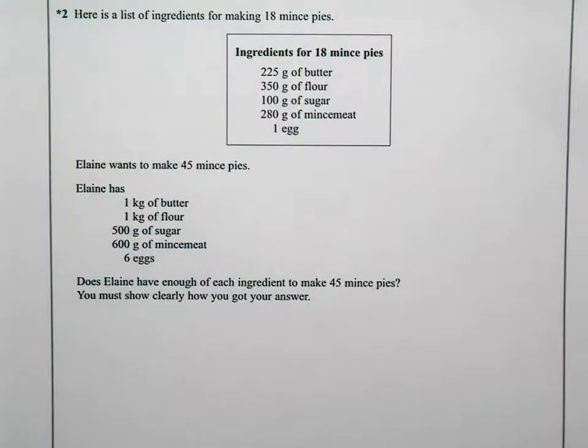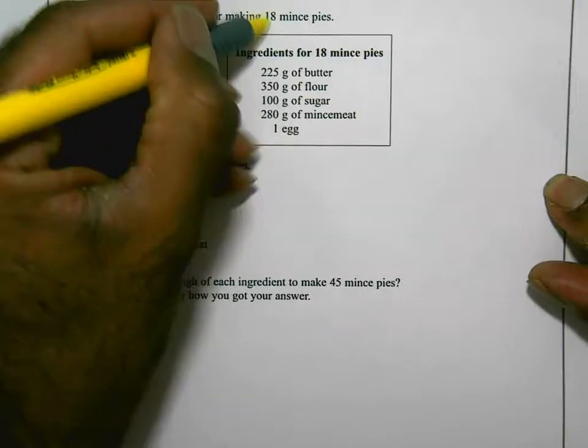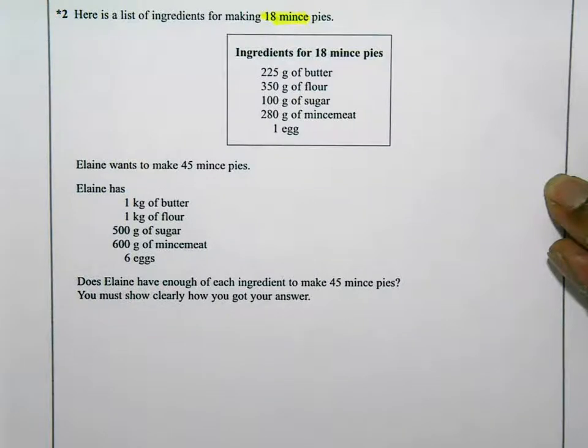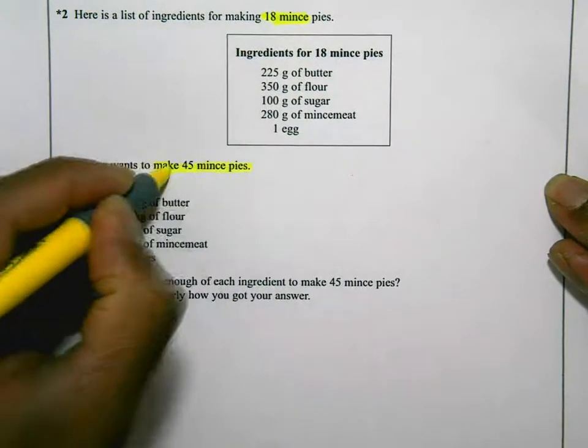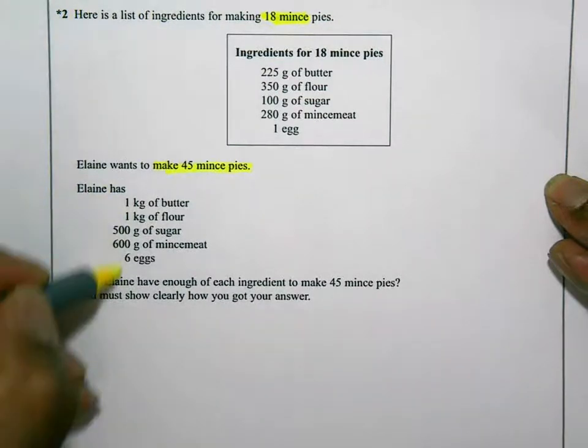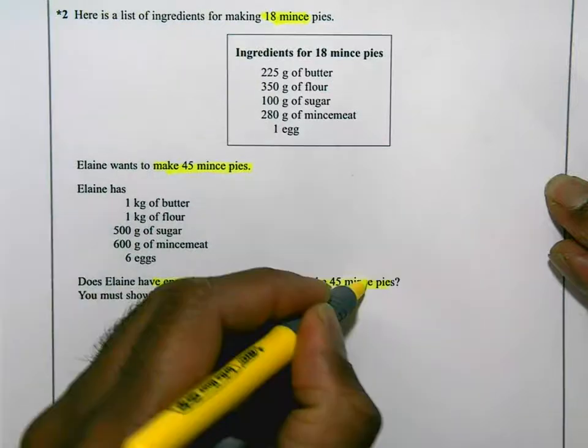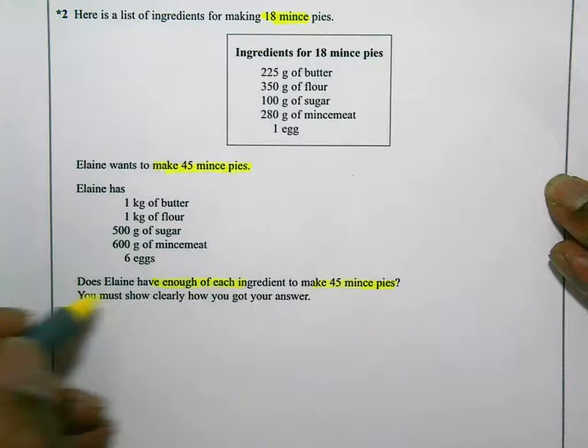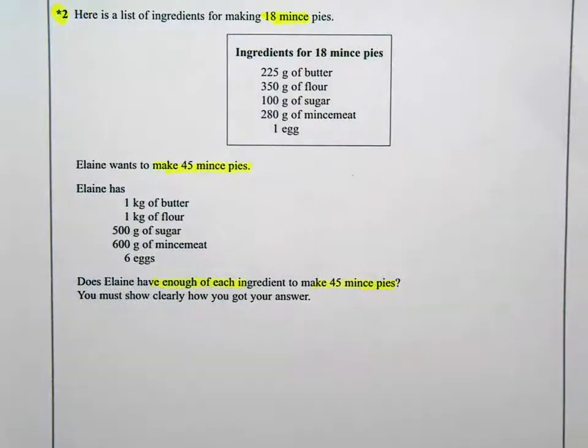It says here's a list of ingredients for making 18 mince pies. So we've got that list of ingredients there for making 18 mince pies. Elaine wants to make 45 mince pies. These are the ingredients she has. Does Elaine have enough of each ingredient to make 45 mince pies? You must show clearly how you got your answer. And this is a starred question, so they want me to write a sentence at the end of this.